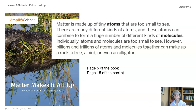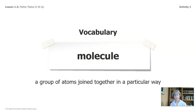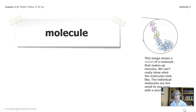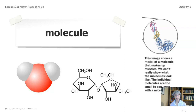That is page 5 of your book and also page 15 of the packet. Here's another word we need to look at: molecule — a group of atoms joined together in a particular way. The book says, from page 7, this image shows a model of a molecule that makes up muscles. The individual molecules are too small to see, even with a microscope. Scientists create drawings to help represent the molecules they are studying. This is a molecule representing water, and this is a molecule representing sucrose. Sucrose is one of the molecules that make up our table sugar.